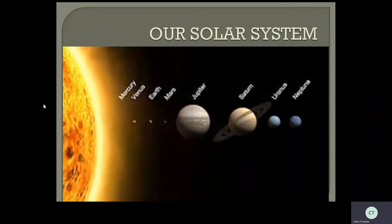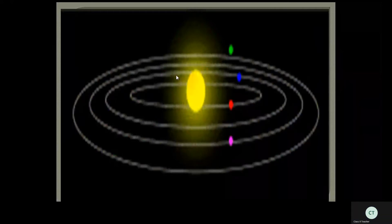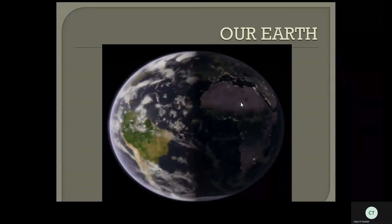Look at the screen — this is the solar system. Here you can see Mercury, Venus, Earth, Mars, Jupiter — see, Jupiter is the largest planet — Saturn, Uranus, and Neptune. Mercury is the smallest planet, so small you can barely see it. And here — this is our Earth.